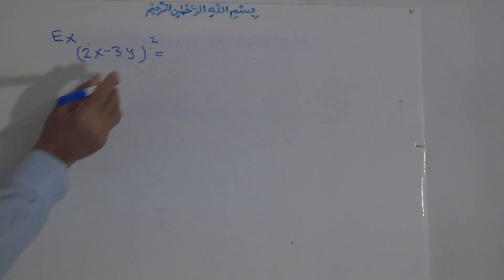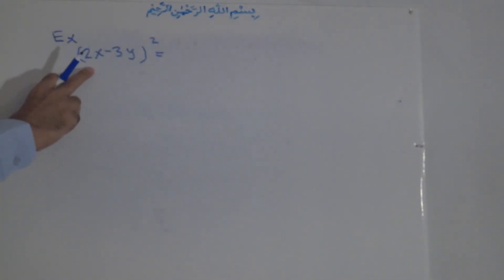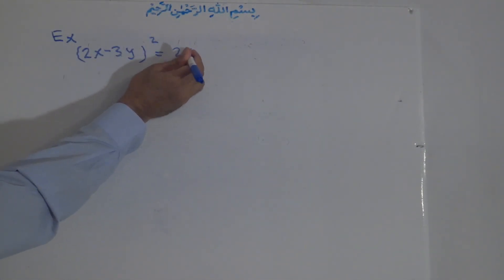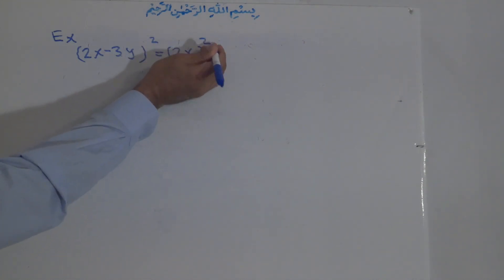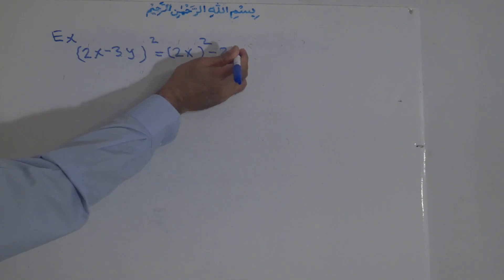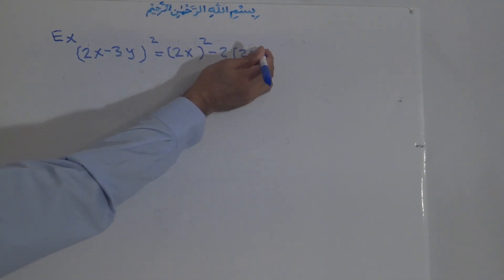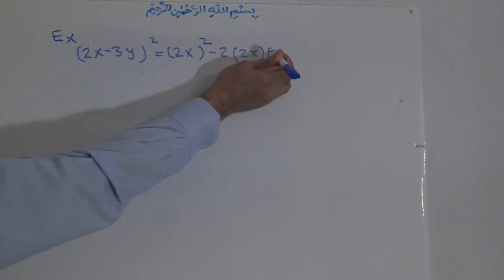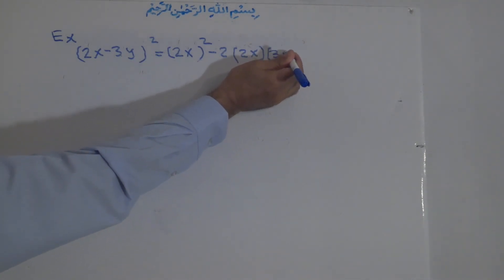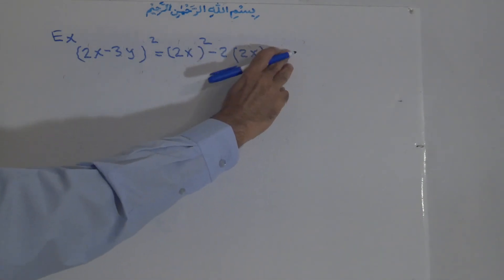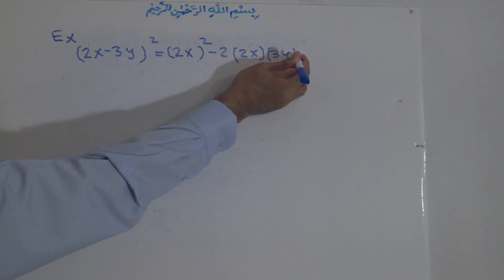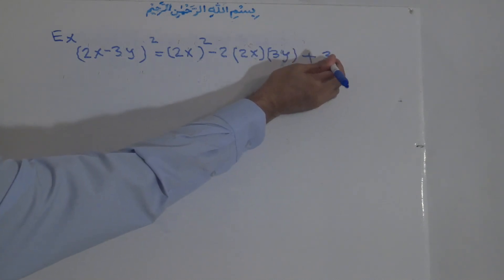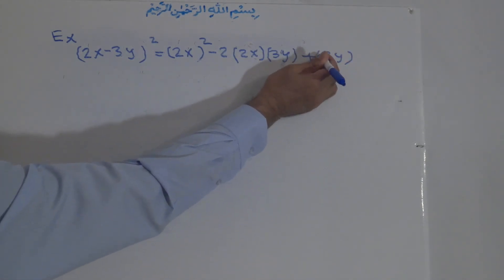Using the identity, a is the first term which is 2x. So we have 2x squared, minus 2 times the first term 2x times the second term 3y, plus the square of the last term, which is 3y, all squared.